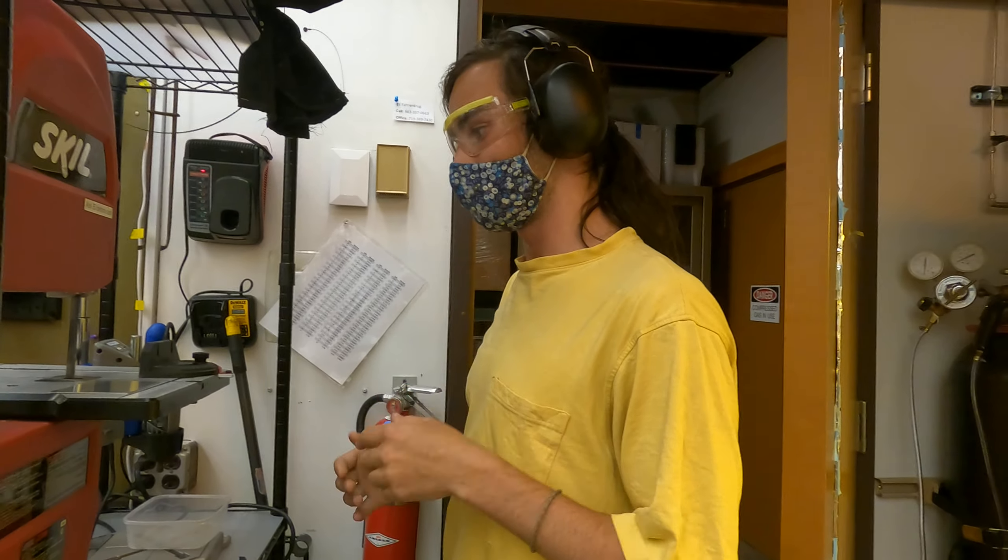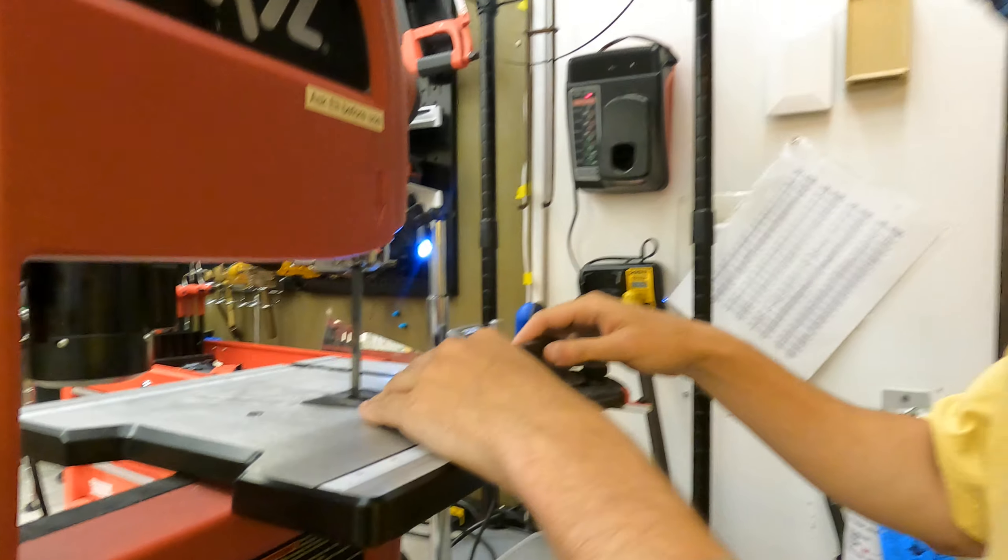We are cutting aluminum today, which means we are going to be using the metallic blade. There's a switch here on the machine and that's pretty much the only controls on the machine. You flip this switch and the blade starts moving.